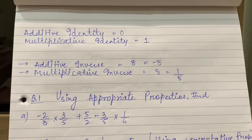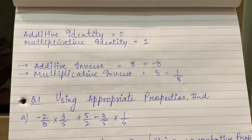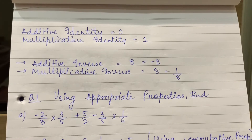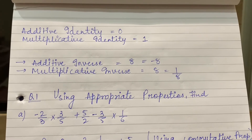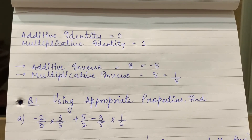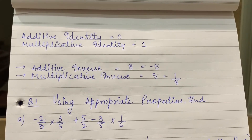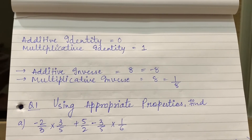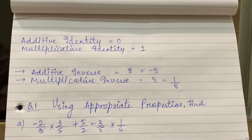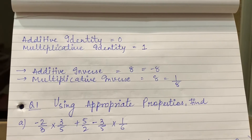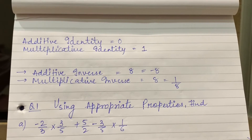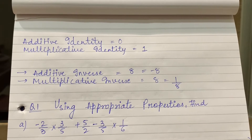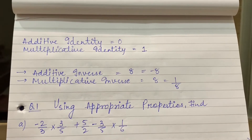Very, very important — 1 mark fill-up question. It is very important, it is not going to be confused. Remember: if I multiply by 1, then my number will be the same; if I add 0, then my number will be the same. If you get confused and think that additive identity is 1, then see: 3 plus 1 is 4, the result is changing. So additive identity is 0 and multiplicative identity is 1.